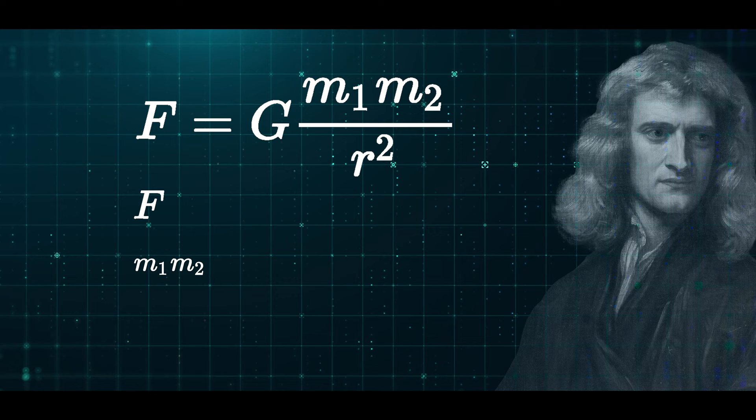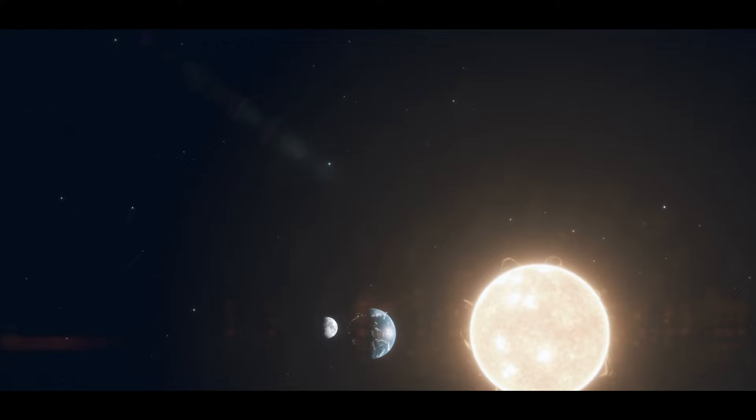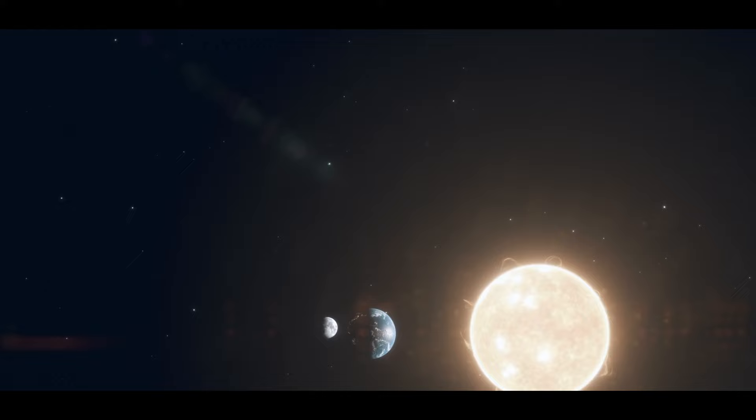Where F is the force, M1 and M2 are the masses of the objects interacting, R is the distance between the centers of the masses, and G is the gravitational constant. The strength of gravity between two objects depends on their masses and the distance between them.